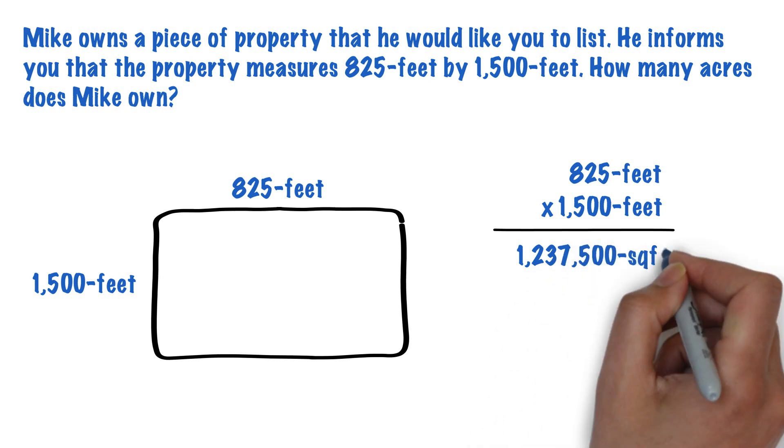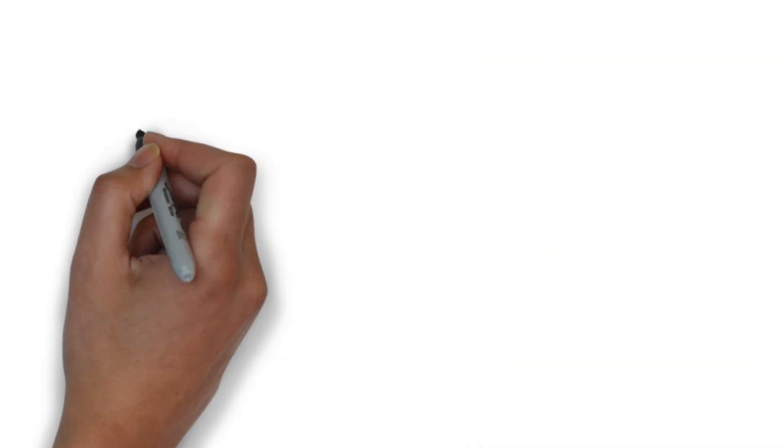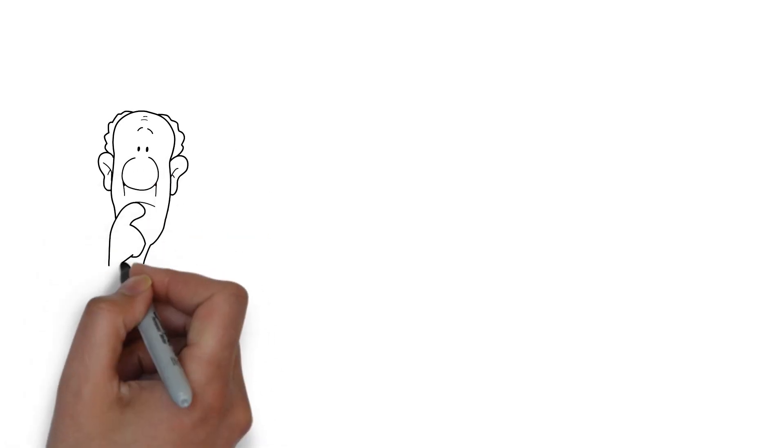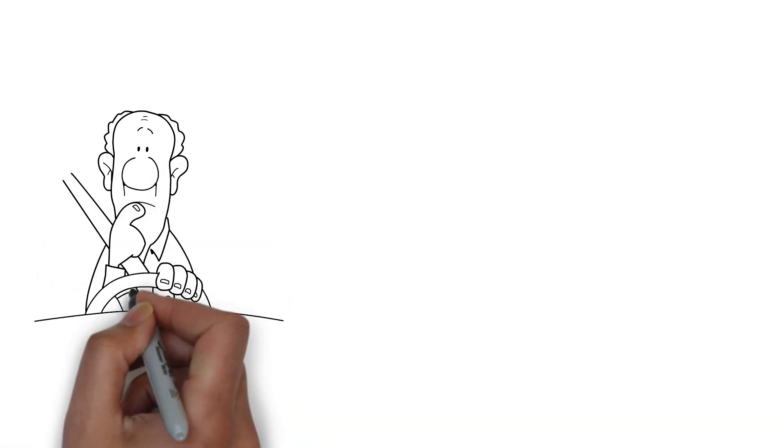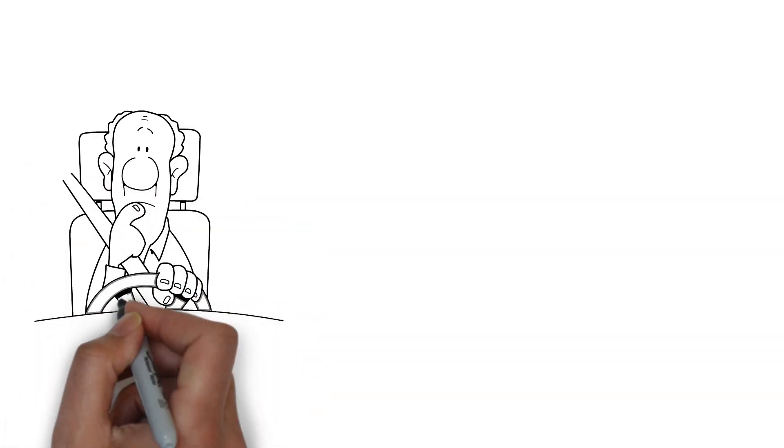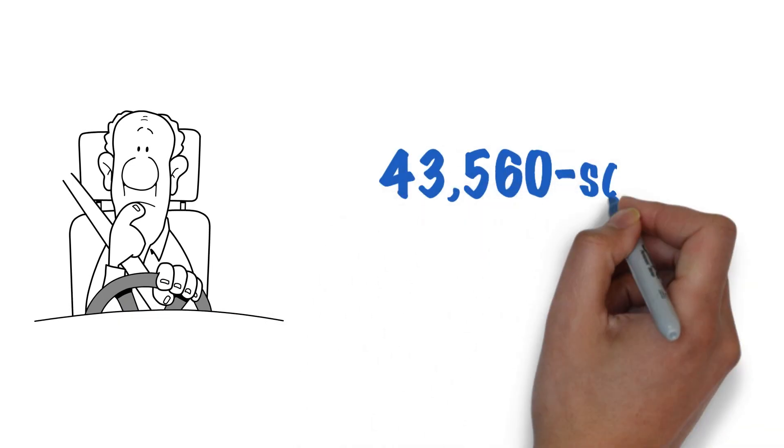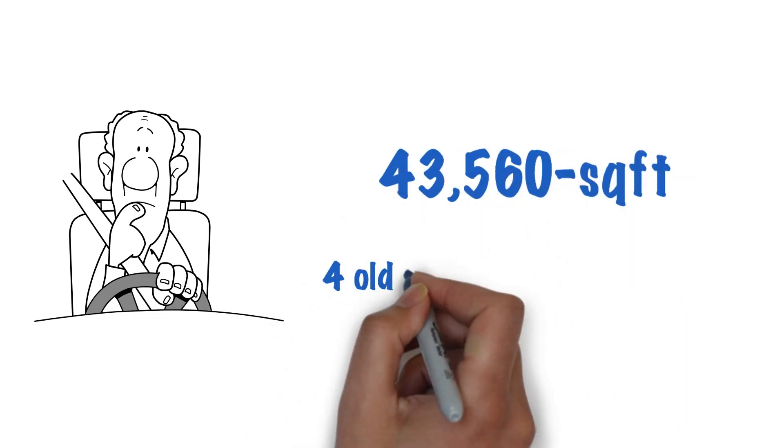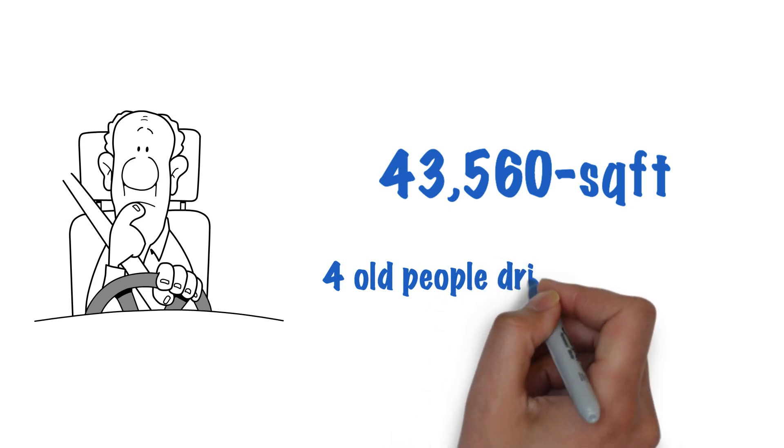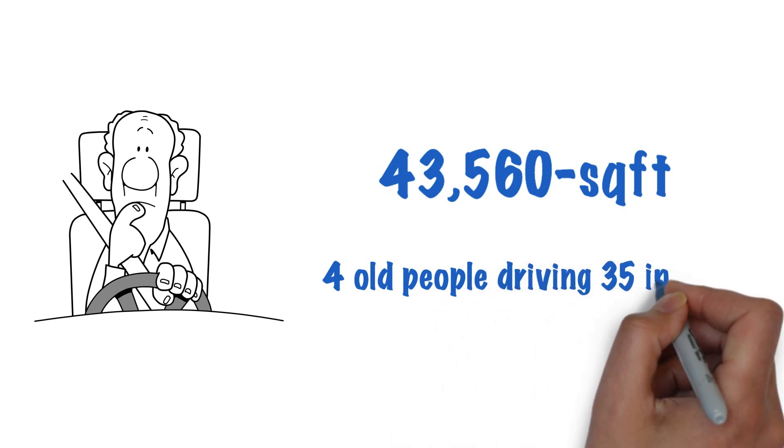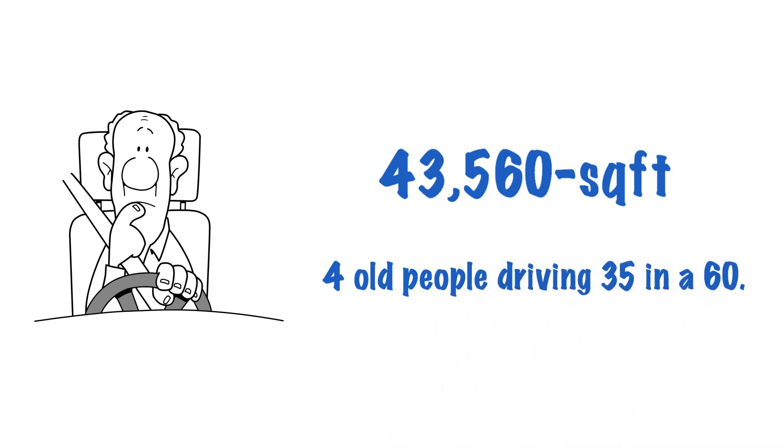Next, we need to find out how many acres that equals. To get that number, we know that an acre is 43,560 square feet. We can remember that number easily using the memory aid: four old ladies driving thirty-five in a sixty.